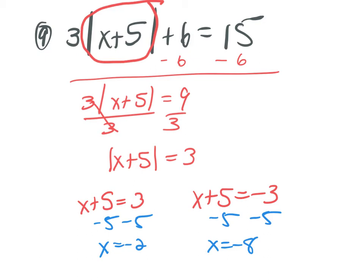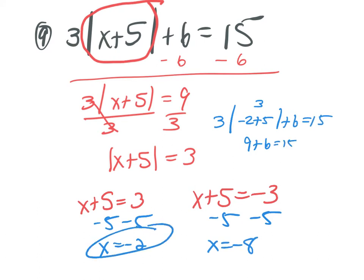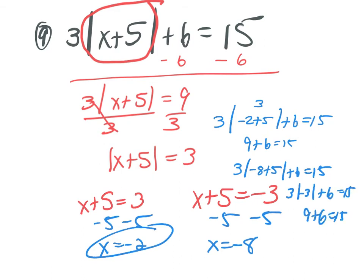You need to use the opposite of PEMDAS — SADMEP — undoing subtraction/addition first, then multiplication/division. When we go back to check: 3 times the absolute value of negative 2 plus 5, plus 6 equals 15. Negative 2 plus 5 is 3, so 3 times 3 is 9, plus 6 is 15. Good. When I plug in negative 8: 3 times the absolute value of negative 8 plus 5 plus 6 equals 15. That's 3 times absolute value of negative 3, plus 6: 9 plus 6 equals 15. Good.